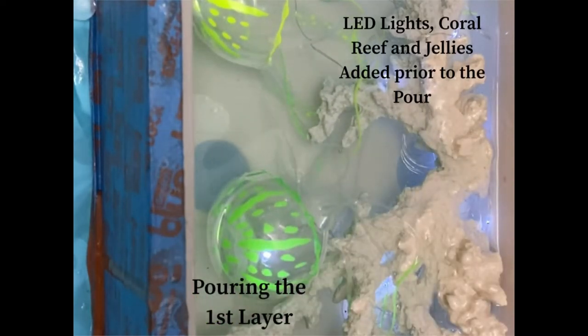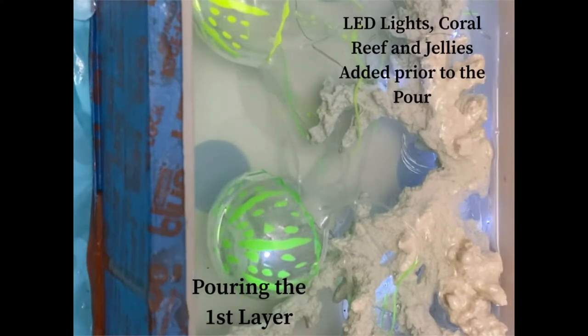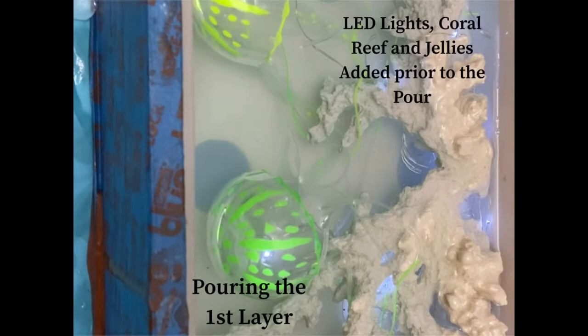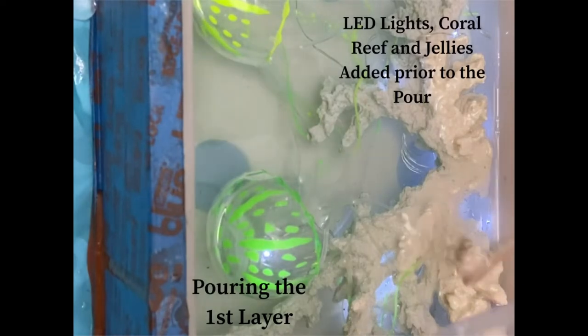I placed the jellyfish, the coral reef, and the LED lights in the mold first and then did my first layer. For this sculpture I decided to do two layers so that the first layer would set the jellyfish and the coral reef where I want them.